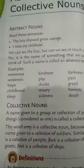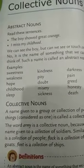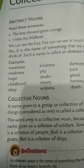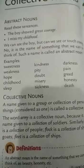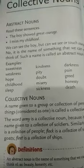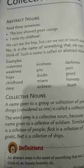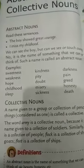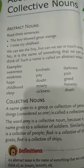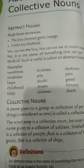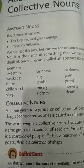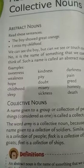These kinds of words are abstract nouns. For example: sweetness, kindness, darkness, weakness, pity, pain, hope, doubt, grief, childhood, misery, honesty, sleep, sickness, and death.